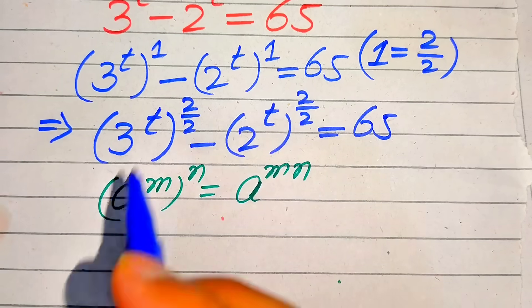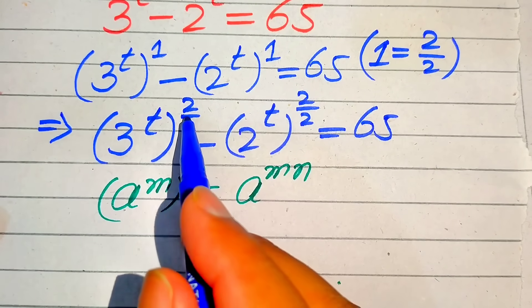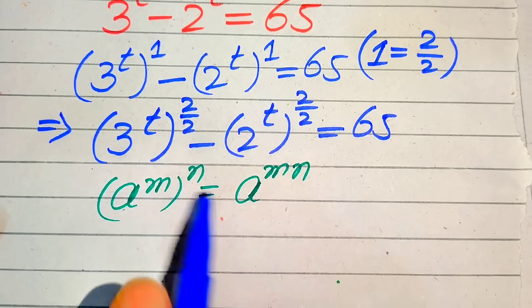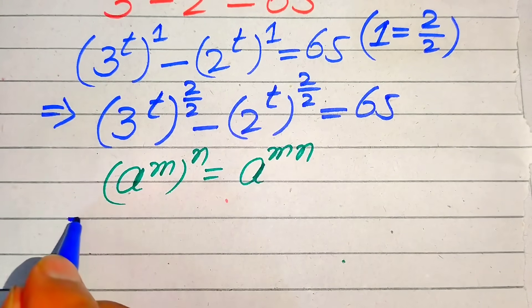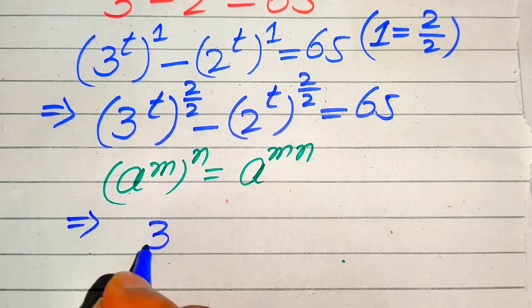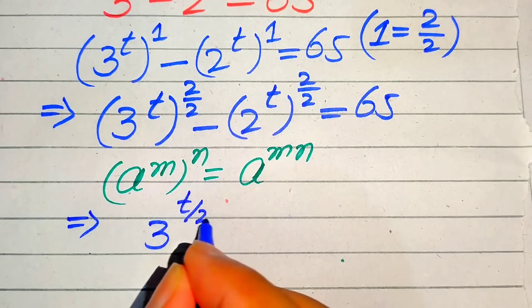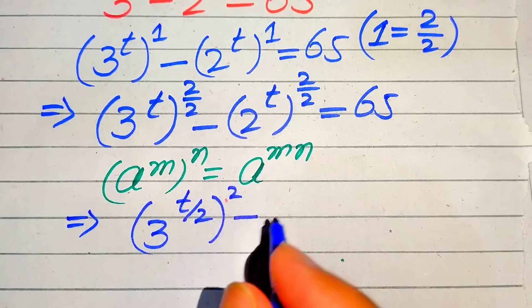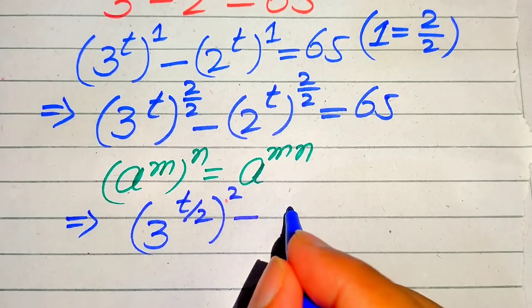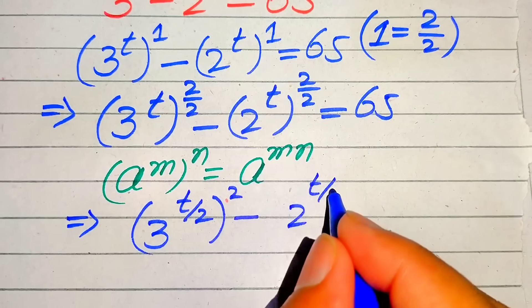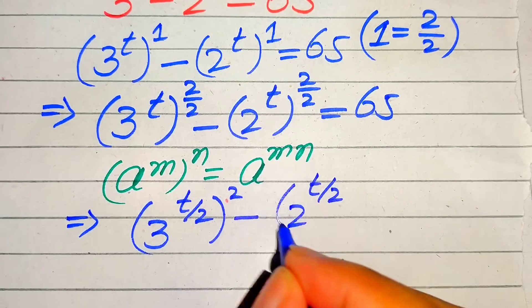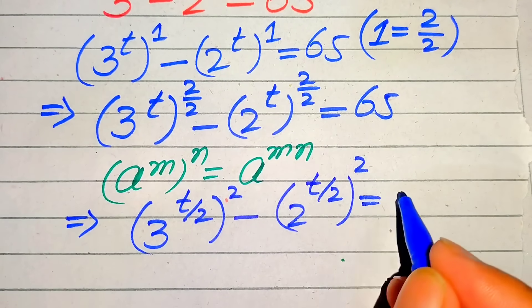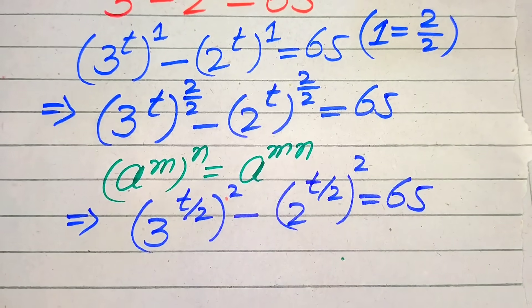In the exponent of each term we have 2 over 2, so we move the 1 over 2 inside the term. It is then written as 3 to the power of t over 2, whole squared, minus 2 to the power of t over 2, whole squared, equals 65.